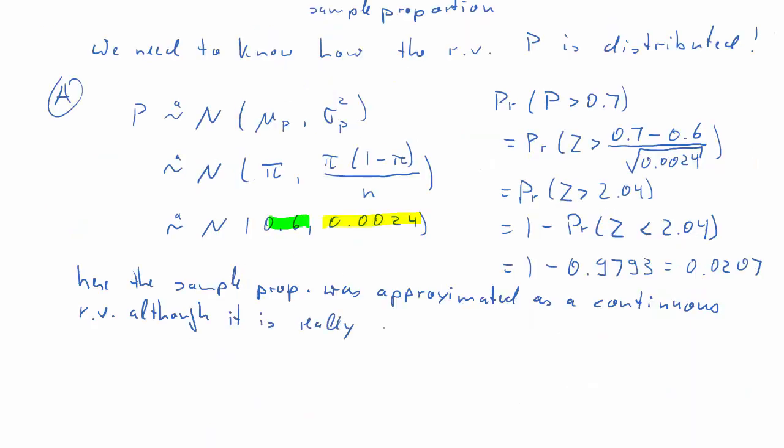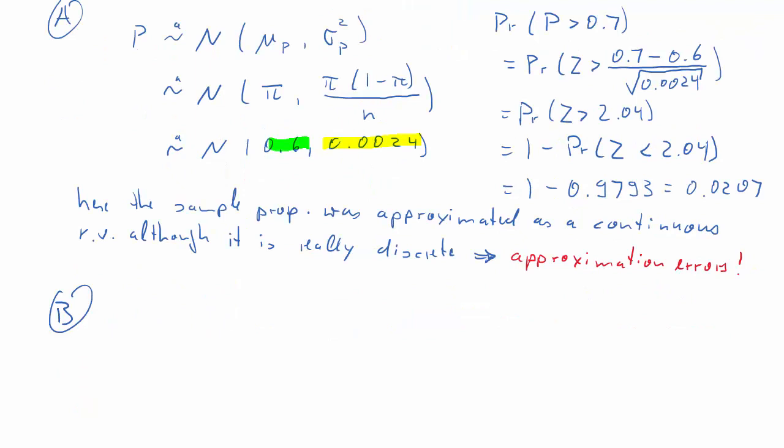It can be 0.01, 0.02, but it cannot be 0.001467, for instance. So, therefore, the way how we calculated the probability here is really an approximation, and there will be an approximation error, and we'll see the exact result later. It's close to the 2% which we calculated.